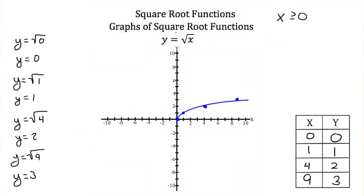The graph of y equals the square root of x is just like the graph of y equals x squared. Y equals x squared is a parabola, and you may notice that the graph of y equals the square root of x looks kind of like half of a parabola — only half, because the domain is restricted.